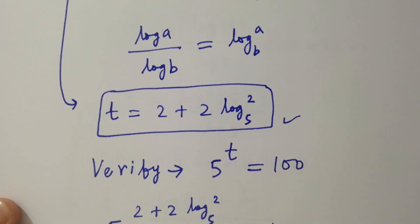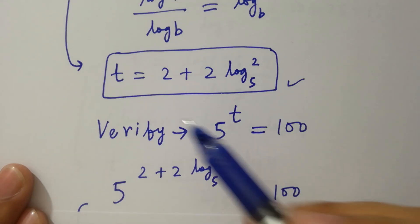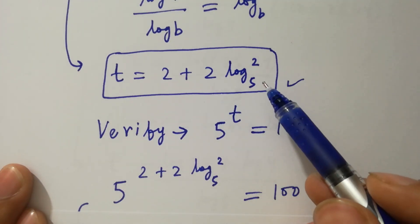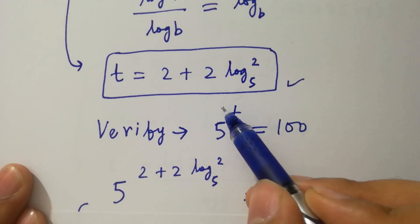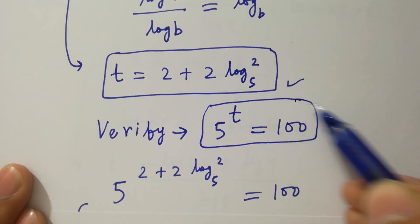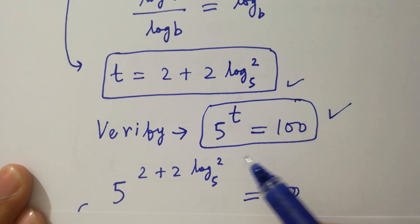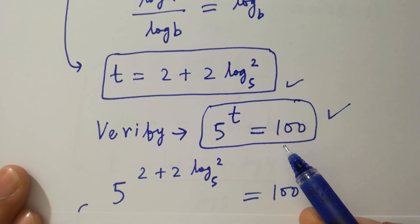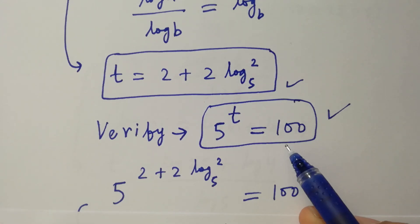The value of t equals 2 plus 2 log 2 to the base 5 satisfies the equation 5 to the power t equals 100. Thanks for watching this video. Please subscribe to this channel to get notifications of my new videos. Bye bye.